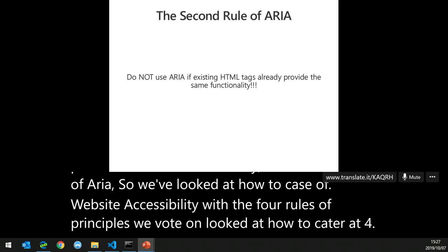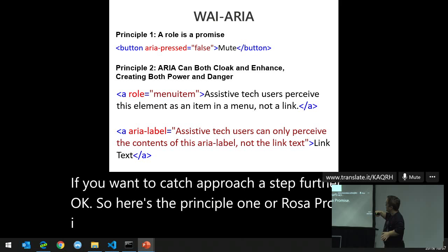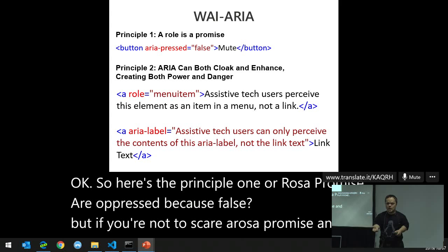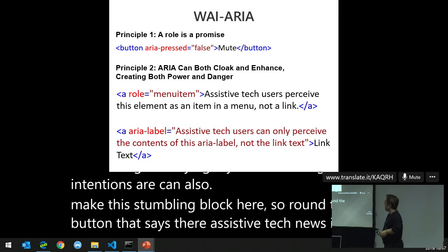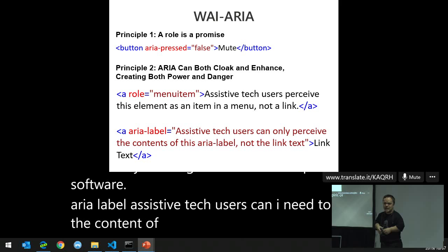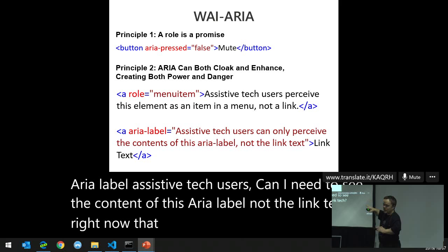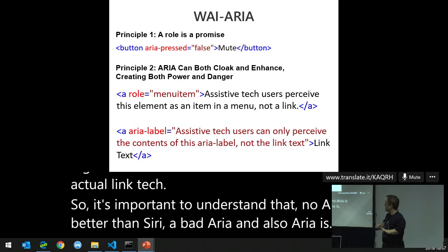The second rule of ARIA: a role is a promise. If you declare 'aria-pressed equals false', you're making a promise to the assistive technology. At the bottom here, it says assistive tech users perceive the element as a menu item, not a link — so I'm actually creating an error for the screen reader. An aria-label will be read instead of the link text. Understand: no ARIA is better than bad ARIA, and ARIA is a promise.